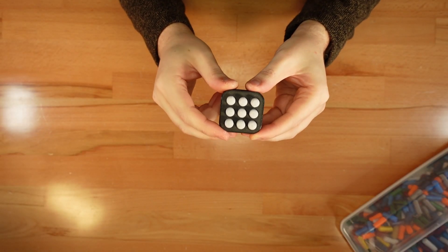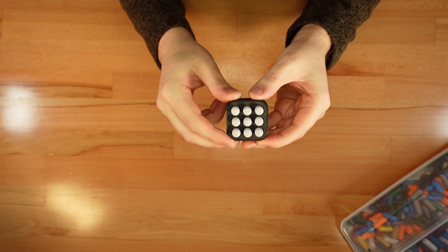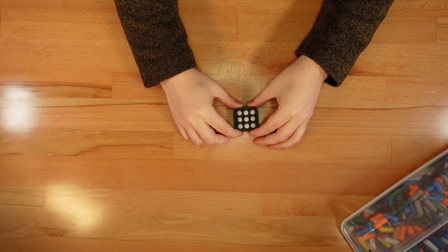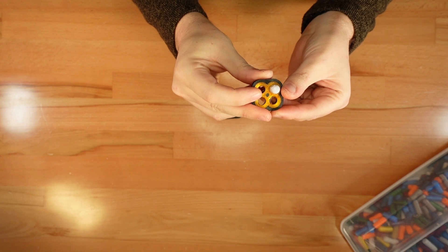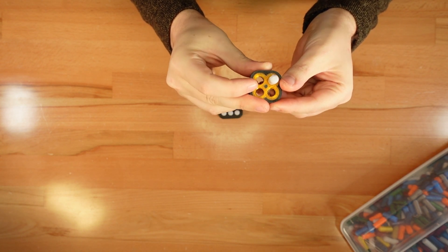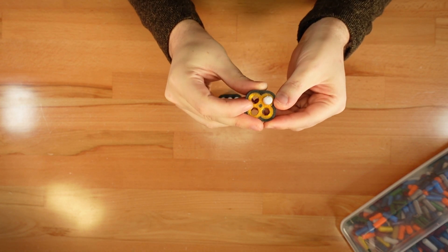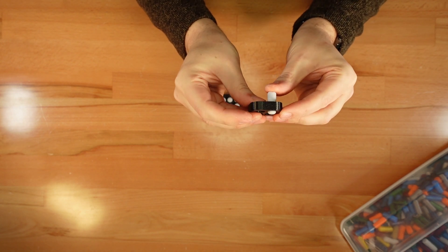This is a pop fidget, perpetually poppable bubble wrap. The outer case and buttons are rigid PLA, but inside you'll find a flexible TPU gasket. The holes in this part flex just enough to allow the button to snap between positions.